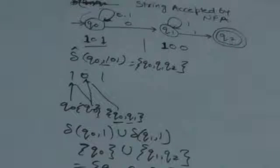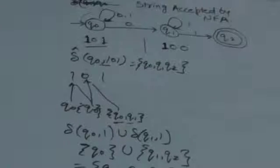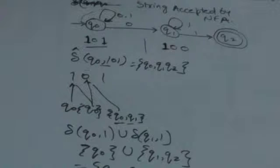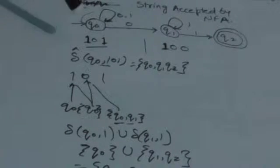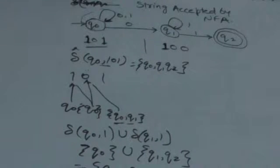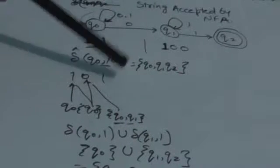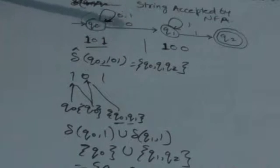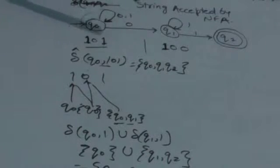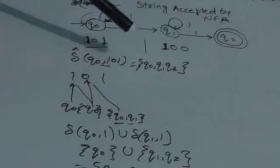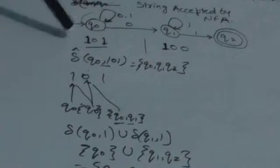Hello friends, welcome back to the tutorial. In this tutorial we will study how a string is accepted by NFA. A string is accepted by NFA if we apply that string to its initial state, then whatever set of states we get as output and that set contains at least one final state, then that string will be accepted by the NFA.